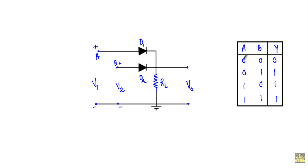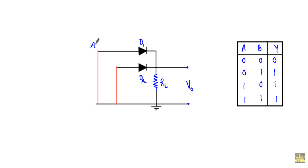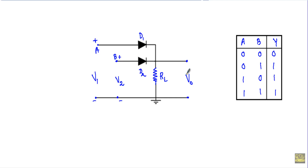Now let me talk about the first case: when A is at logic 0 and B is at logic 0, that means voltage V1 will be equal to 0 and voltage V2 will be equal to 0. Both A and B terminals will be connected to ground. If I connect both A and B terminals to ground, there will be no voltage source in the circuit, therefore our output will be equal to 0.